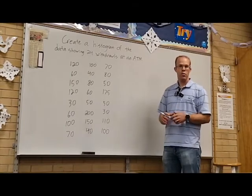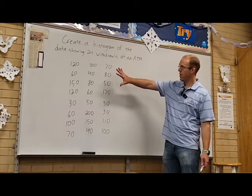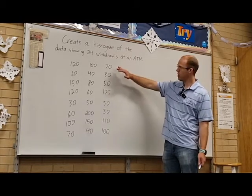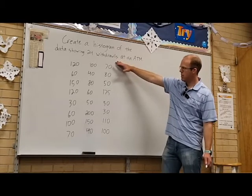We've already created histograms when we were given a frequency table, but I wanted to do one more example where we just had the raw data right here. You can see I've given a table showing 24 withdrawals at an ATM.